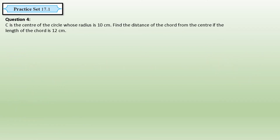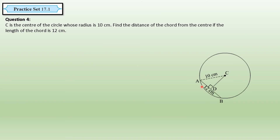Question 4 of practice set 17.1: C is the center of the circle whose radius is 10 centimeters. Find the distance of the chord from the center if the length of the chord is 12 centimeters. The radius CA is 10 centimeters and the chord length is 12 centimeters. We need to find the length CD, the distance from the center to the chord.